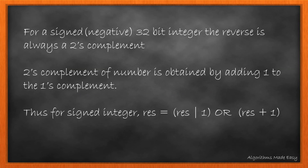Since the previous example had 0 in the most significant bit position, we did not have to perform any additional operations. But if it were 1, we would have to find the 2's complement instead of 1's complement to make the integer positive. The 2's complement of a number is obtained by adding 1 to the 1's complement. Thus, for a signed integer, the result would be result plus 1.